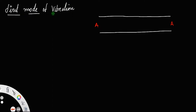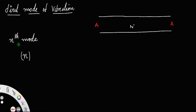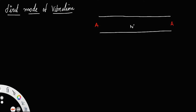For the first mode of vibration, there is only one node between the ends. For the second mode, there are two nodes between the ends of the pipe. In general, for the nth mode, the number of nodes formed in between the ends will be n. Note that for a stretched string it is n minus 1. Now, for the first mode, a node is formed between the ends.